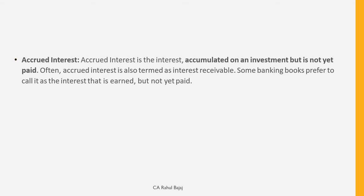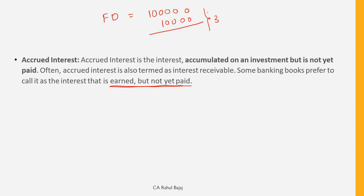Next term is Accrued Interest. Accrued interest means interest that has been earned but not yet paid. For example, suppose you have a Fixed Deposit (FD) of one lakh rupees, and it will mature after 3 years. After one year, you have earned 10,000 as interest, but you will receive the full payment only when the FD matures after 3 years. So that 10,000 is the accrued portion — earned but not paid.